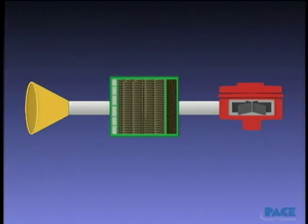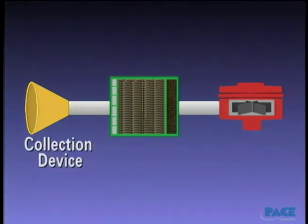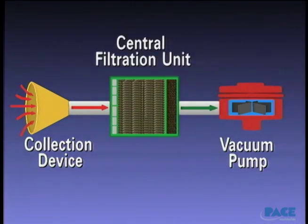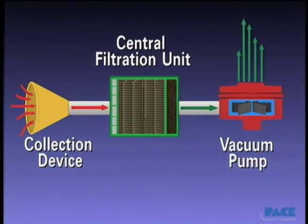Localized exhaust ventilation is known as fume extraction. Effective fume extraction systems contain three primary components. The collection device captures the flux fumes. The vacuum pump pulls the air through the collection device into the central filtration unit. The central filtration unit is the heart of the fume extraction system, which removes the contaminants contained in flux fumes and allows cleaned air to be returned back into the workplace.